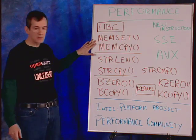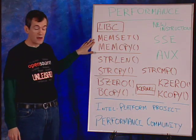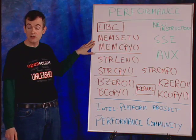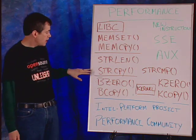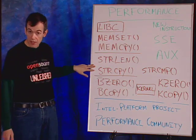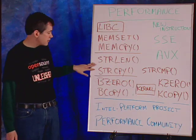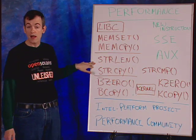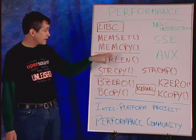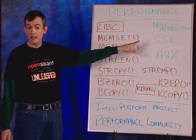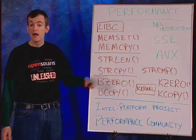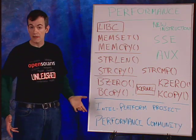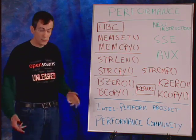Some benchmarks with real applications have shown around 10% performance improvement — pretty good for no work on your part, just using the new operating system. This is available today in current builds of OpenSolaris, eventually showing up in a Solaris 10 update. We're also working in the area of strings — string length, string copy, string compare — using various versions of the SSE instructions that do string manipulation to speed those up within the processor.